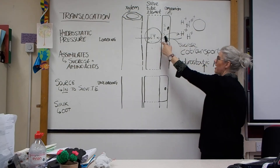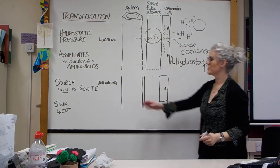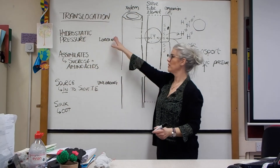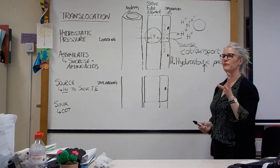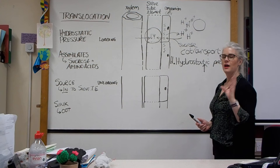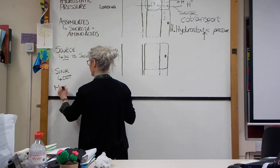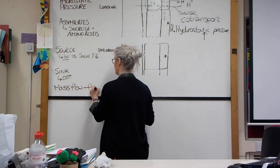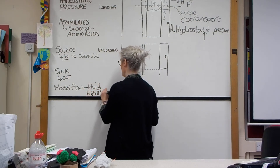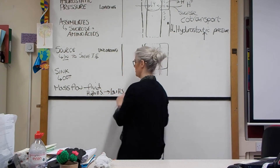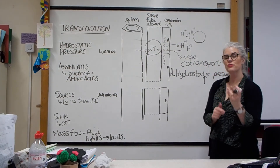So we have a high hydrostatic pressure at the site of loading — at the source. Now, mass flow is the movement of fluid from high hydrostatic pressure to low hydrostatic pressure. We've created an area of high pressure at the source, so now we need to create an area of low pressure, which happens at the sink.